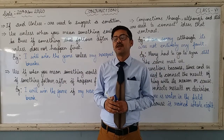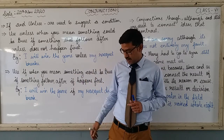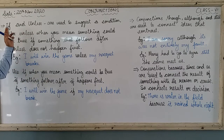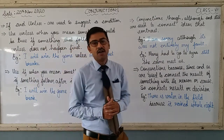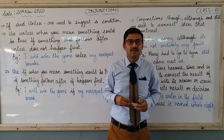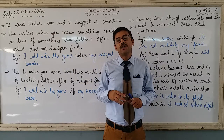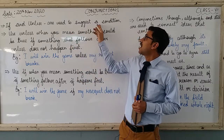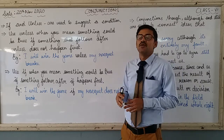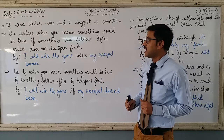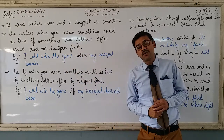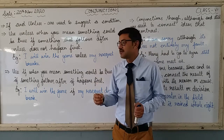We are going to learn about these two subordinate conjunctions, and apart from that there are some more coming. First things first — 'if' and 'unless' are used to suggest a condition. Whenever we use either 'if' or 'unless' as a subordinate conjunction, we use it to suggest a condition. Today we will see the example first and then try to understand what it actually means.